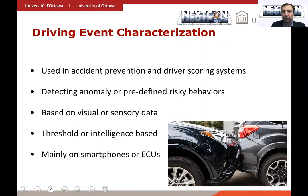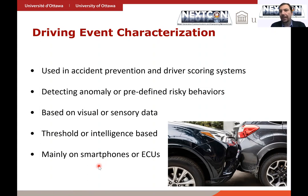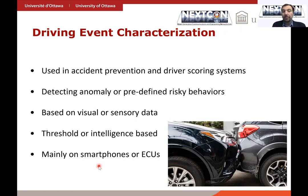One source is visual data — images or video collected through a camera. Or we can rely on sensors: either in-vehicle sensors, IoT sensors, or sensors embedded in smart devices such as smartphones. There are two main techniques used here. One is a threshold-based technique: if the sensor reading is beyond a certain threshold, we say there's an anomaly. There are also more intelligent approaches that rely on clustering or classification-based models, such as support vector machines or neural network-based models.